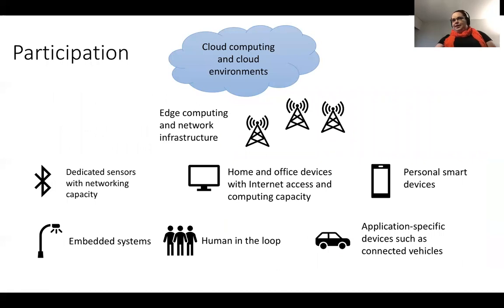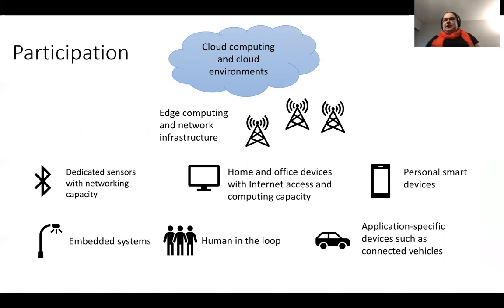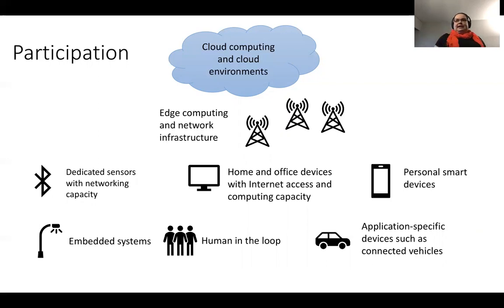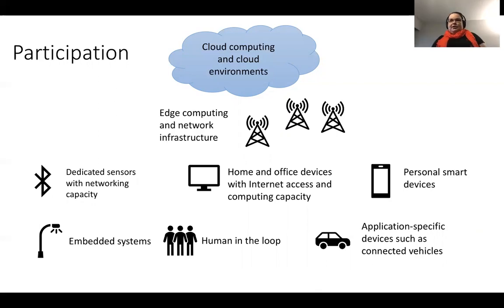The key thing in Internet of Things is participation. No single device which is not communicating, even if it has computational resources, doesn't have the Internet part of it. We have the things — sensors collecting data from the environment, analyzing the environment — and we have actuators that give back feedback, making change in the environment. A very classical example is smart air conditioning, where in real time air quality is measured by sensors and actuators change the air quality control management based on the data readings.